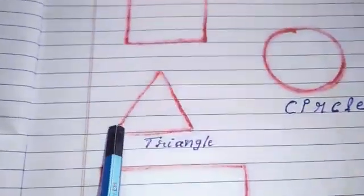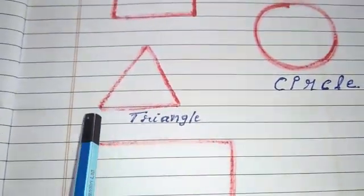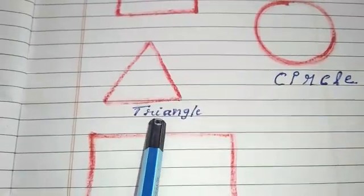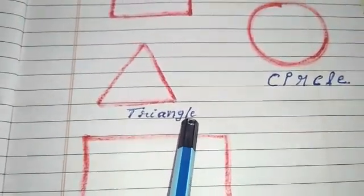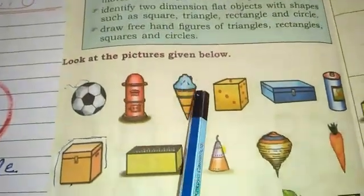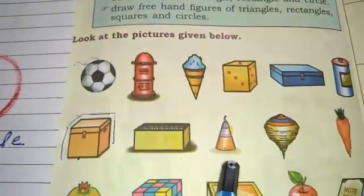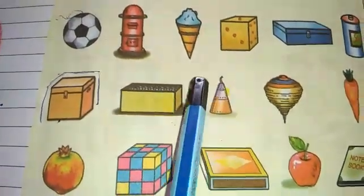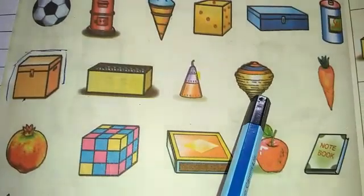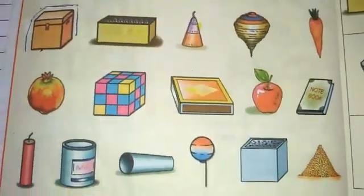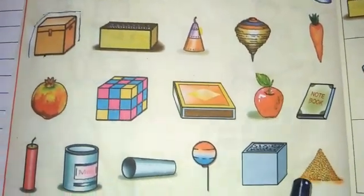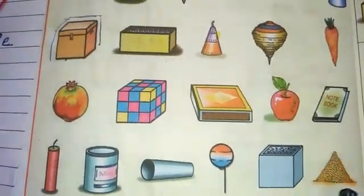Then comes triangle shape — T-R-I-A-N-G-L-E. Let's see the shapes here. Cone is of triangle shape. This flower pot, what you call cracker, is of triangle shape. Top, carrot, and the sand hill is also in a triangle shape.